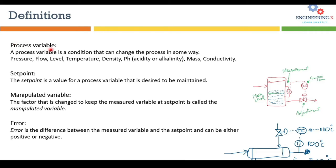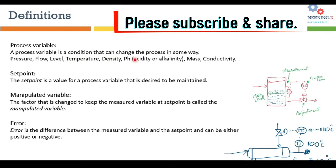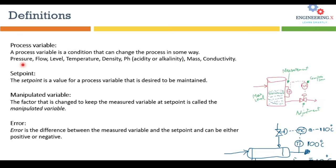A process variable is a condition that can change the process in some way. Examples of process variables include pressure, flow, level, temperature, density, pH, mass, and conductivity — all these variables that influence the overall process are called process variables.